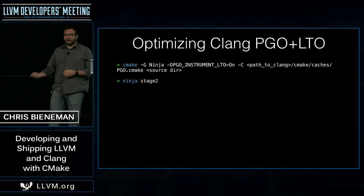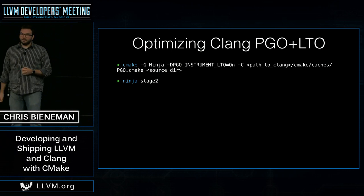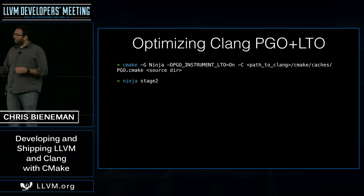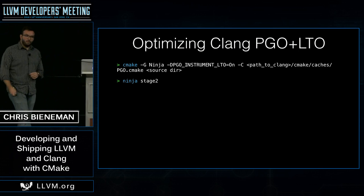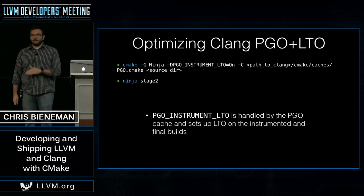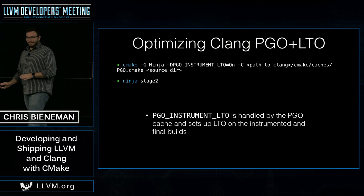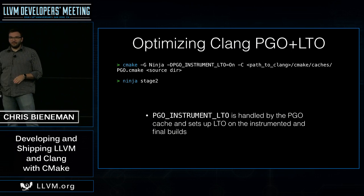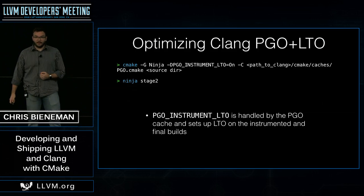If we wanted to add LTO into the mix, it's also very simple. By adding the -D PGO_INSTRUMENT_LTO=ON option before the CMake cache — this is important because these arguments are order dependent — we will enable LTO on both the instrumented and the final build. Running this build takes a really, really long time, but the compiler you get out the other side is as well optimized as we can get it.